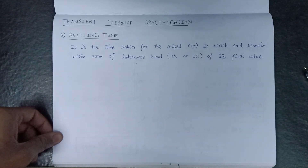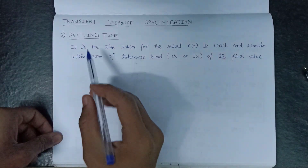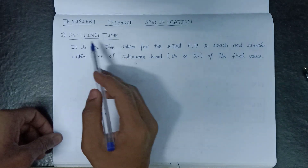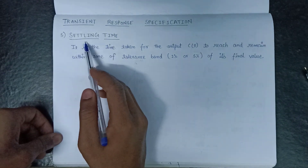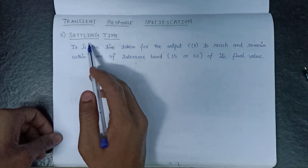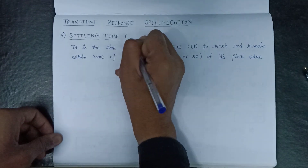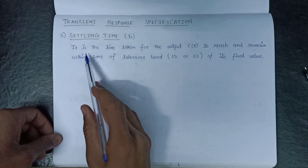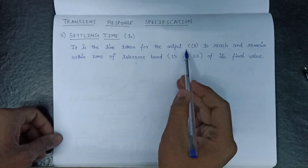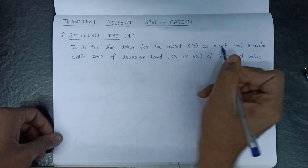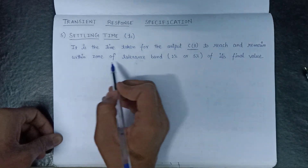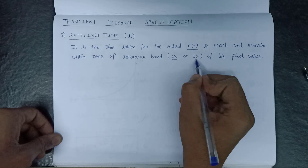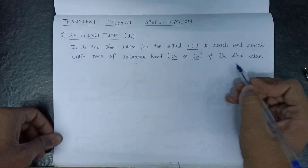Welcome all. In this lecture we are going to learn about the fifth specification of transient response, that is settling time. The settling time is denoted by the symbol T of S, and it is defined as the time taken for the output C(t) to reach and remain within the tolerance band of either 2% or 5% of its final value.